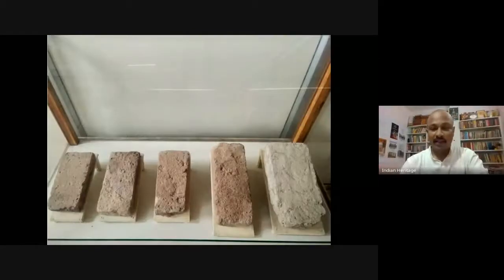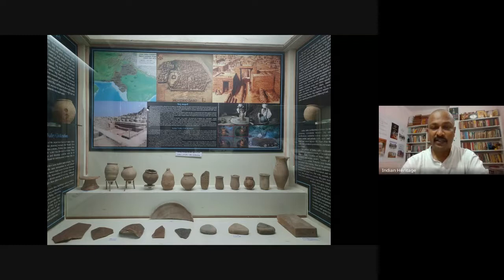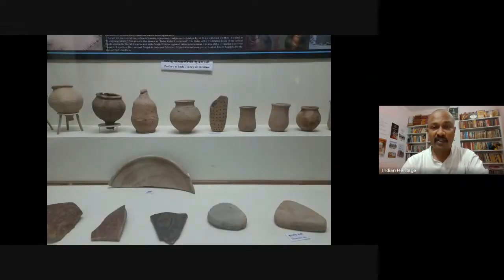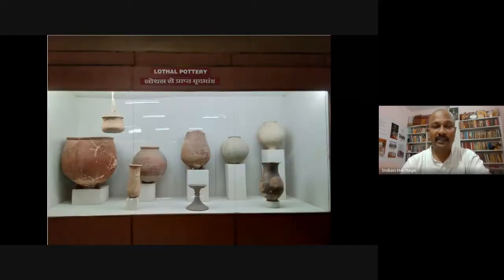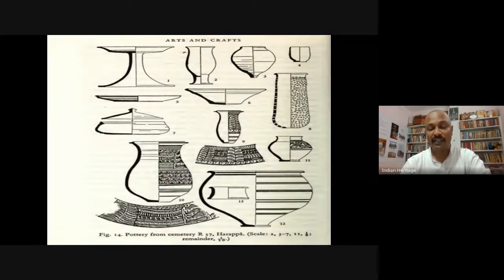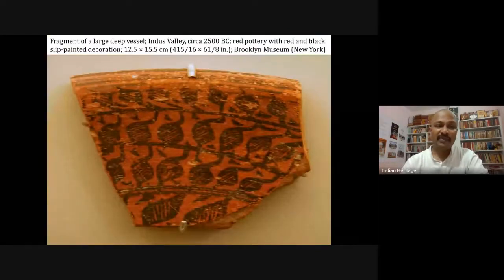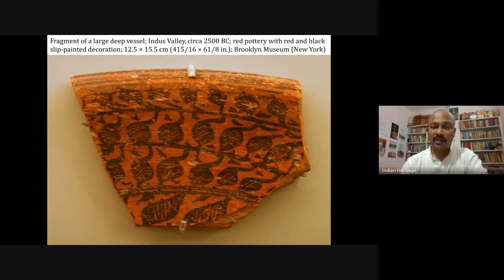We can see different sizes of bricks kept in the Lothal Museum. From the Central Museum Nagpur, we can see pottery of the Indus Valley Civilization — the varieties, different figures, different sizes. Some structures at the time of excavation are shown, including dissolved pottery found in situ at Lothal. Arts and crafts in this period include fragments of large vessels and red pottery with red and black slip painted decoration — dark red and dark black colors.